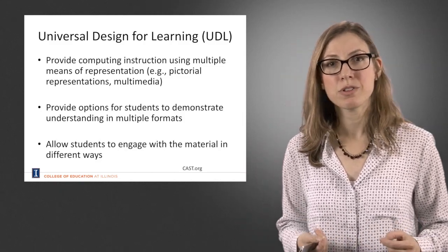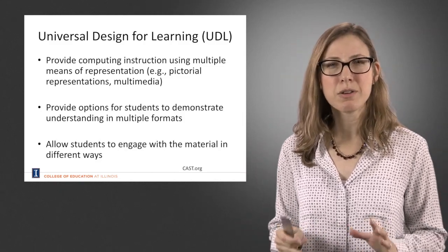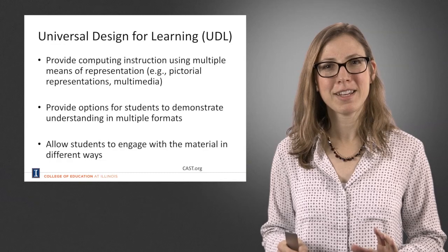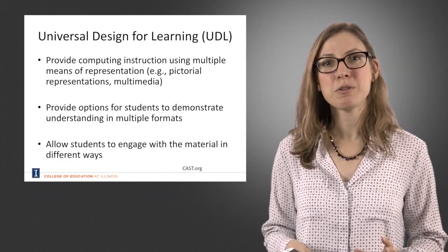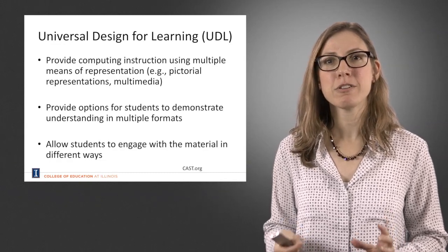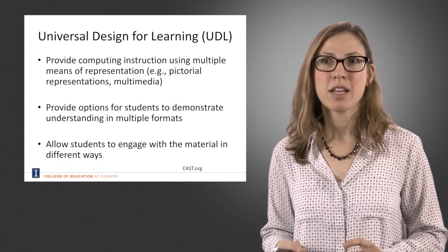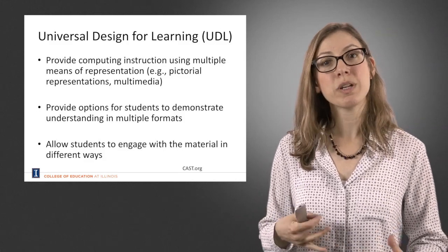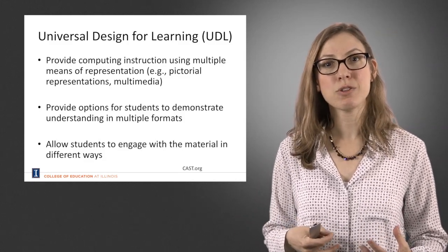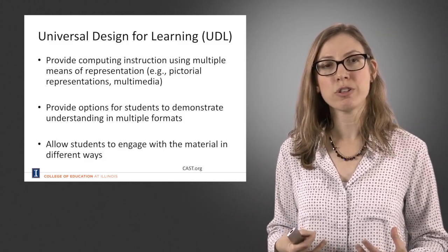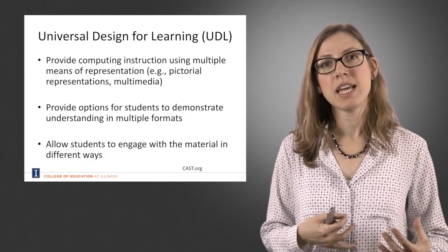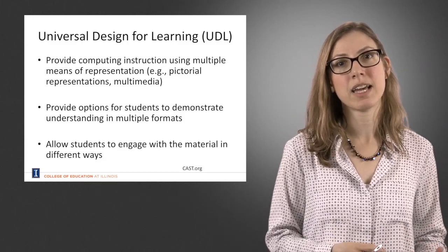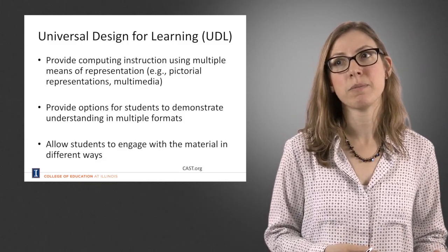It's based on neuroscience, and although this is an oversimplified way of looking at it, it assumes that there are three learning networks. A recognition network — this is the what of learning. What we know is that kids are going to learn information in different ways, so we want to have a flexible way of presenting that information to them.